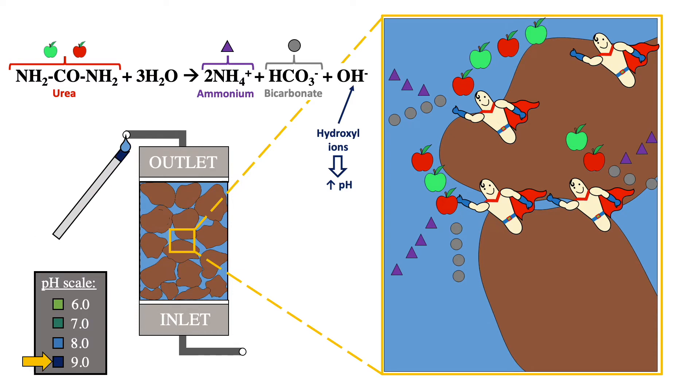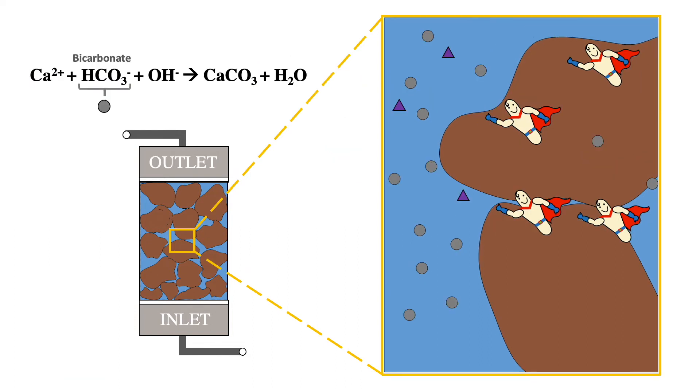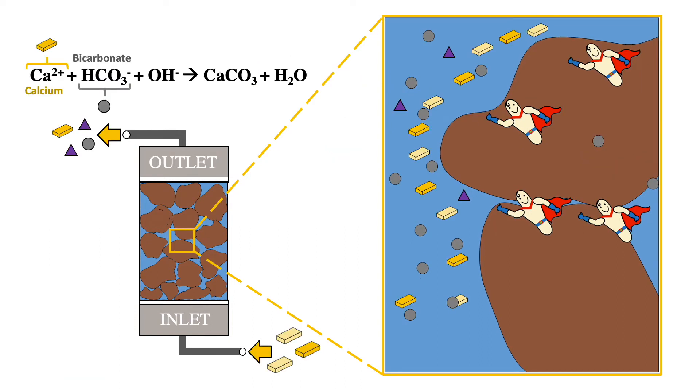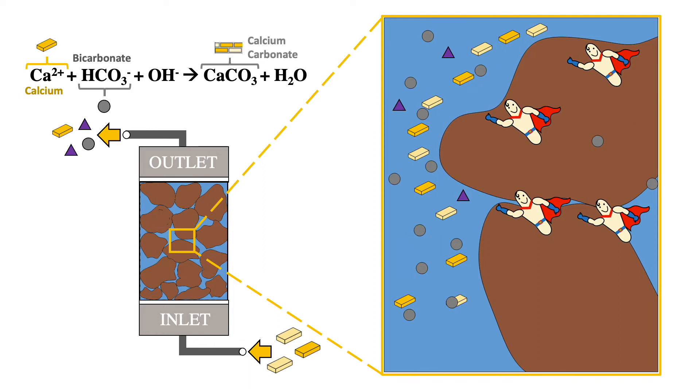When the environment has reached the optimal pH level and calcium is introduced to the system, the carbonate byproduct bonds with the available cations and precipitates as calcium carbonate.